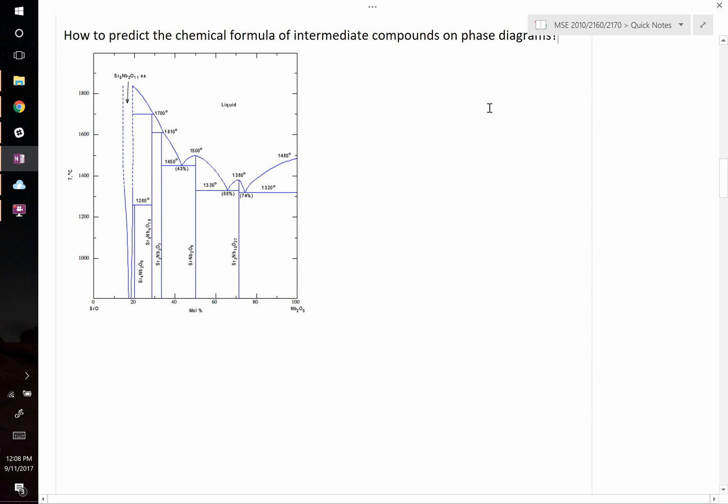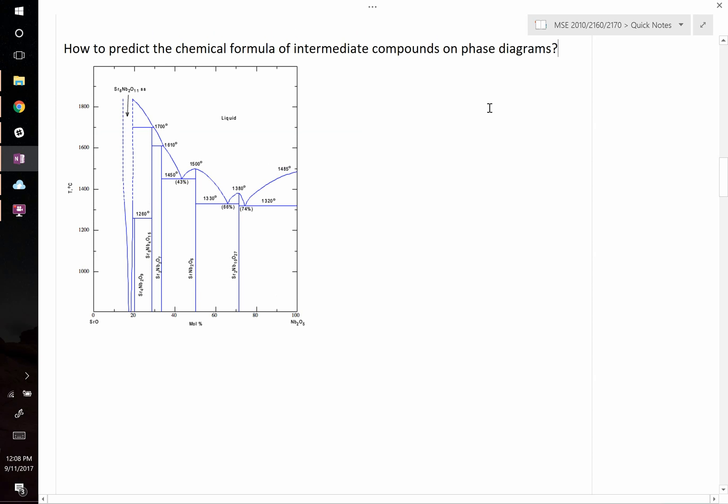Today's problem asks how do you predict the chemical formula of intermediate compounds on phase diagrams? In many phase diagrams they're written, making your life easy. Sometimes they're not written or simply given a Greek letter, so we need to figure out the chemical formula that position on the phase diagram corresponds to. We'll show you two ways to do this.